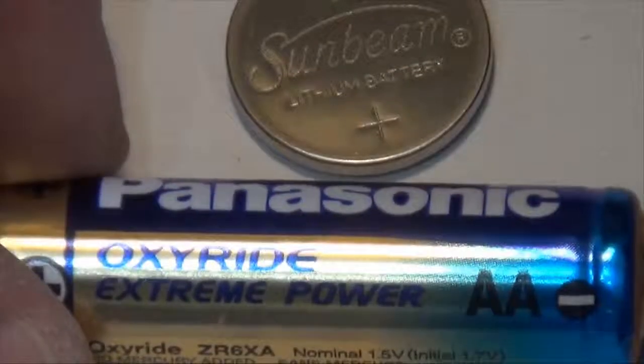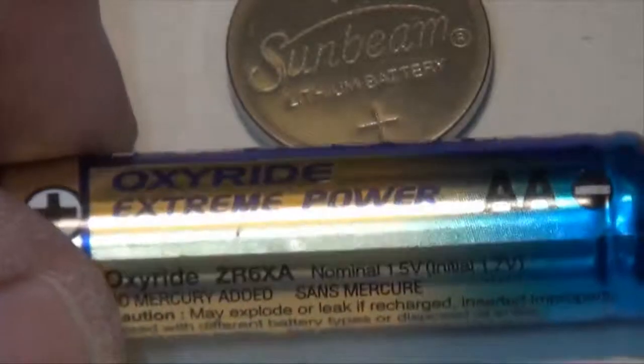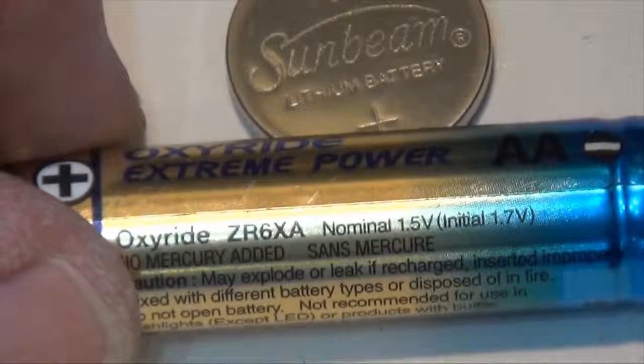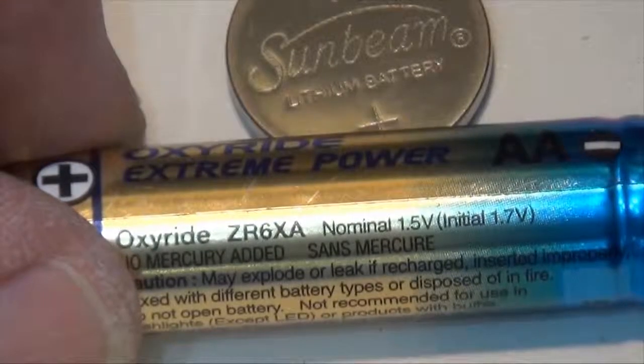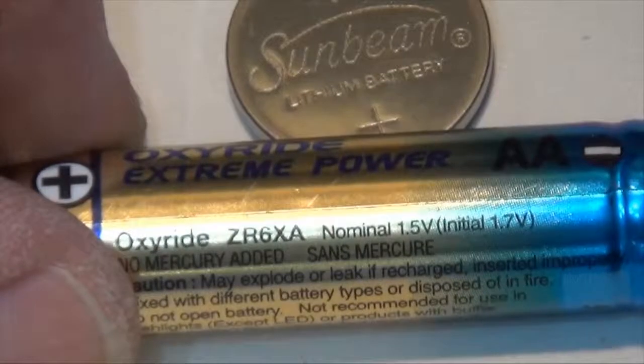Panasonic OxyRide AA battery, extreme power. And if you take a look, there's the model number. The nominal voltage is one and a half volts. The initial voltage coming out of the package would be 1.7 volts.